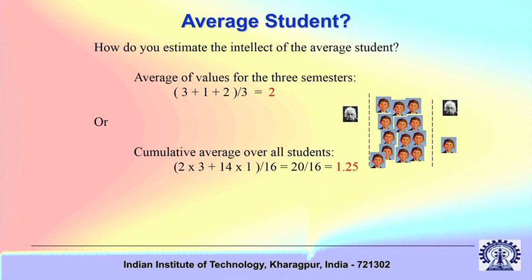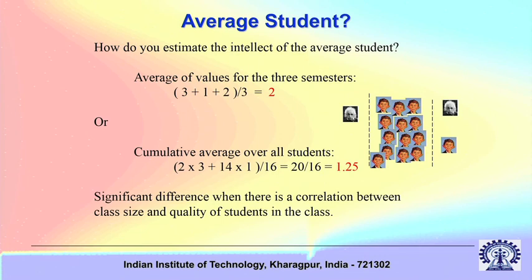Clearly you see that depending on the method of averaging, the estimation of the intellect of the average student, this estimation differs. The percentage deviation is significant, 2 and 1.25, these are grossly different predictions. Why it is so? It is so because there is a correlation between the class size and the quality of students in the class. And this kind of correlation if it is there, then this kind of situation is not fit enough to give you a meaningful average by these methods. This is the lesson that you can learn from this example.